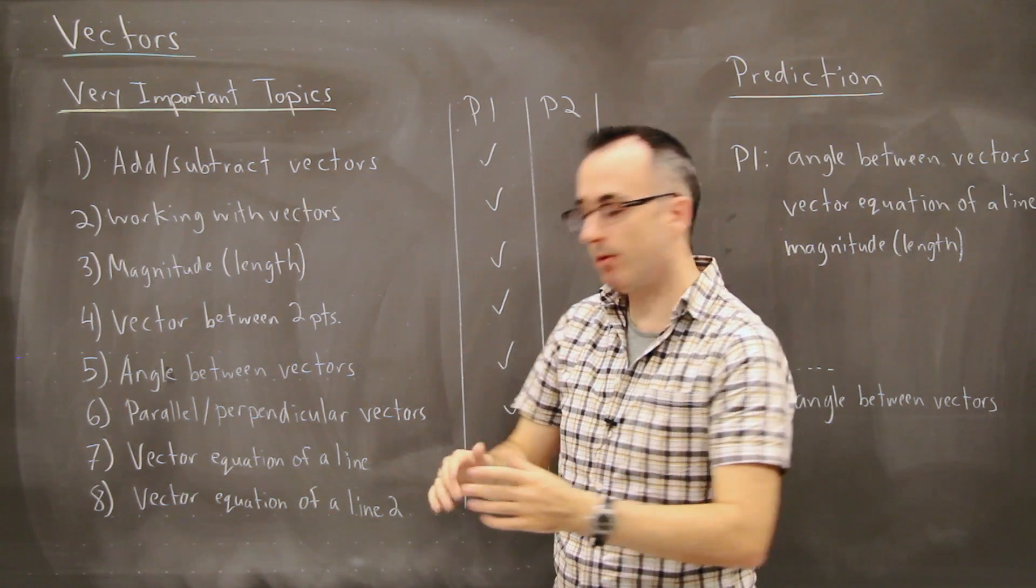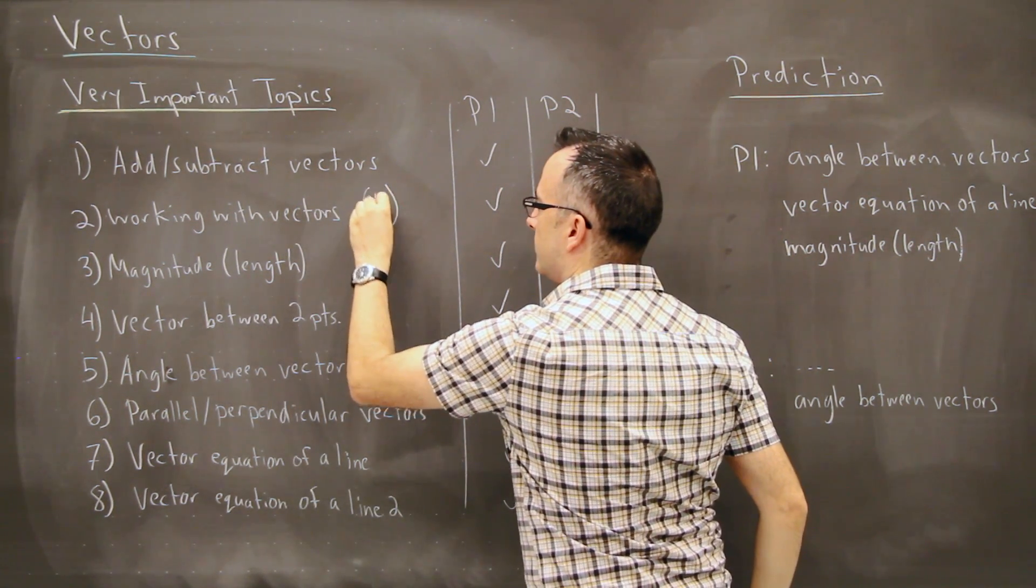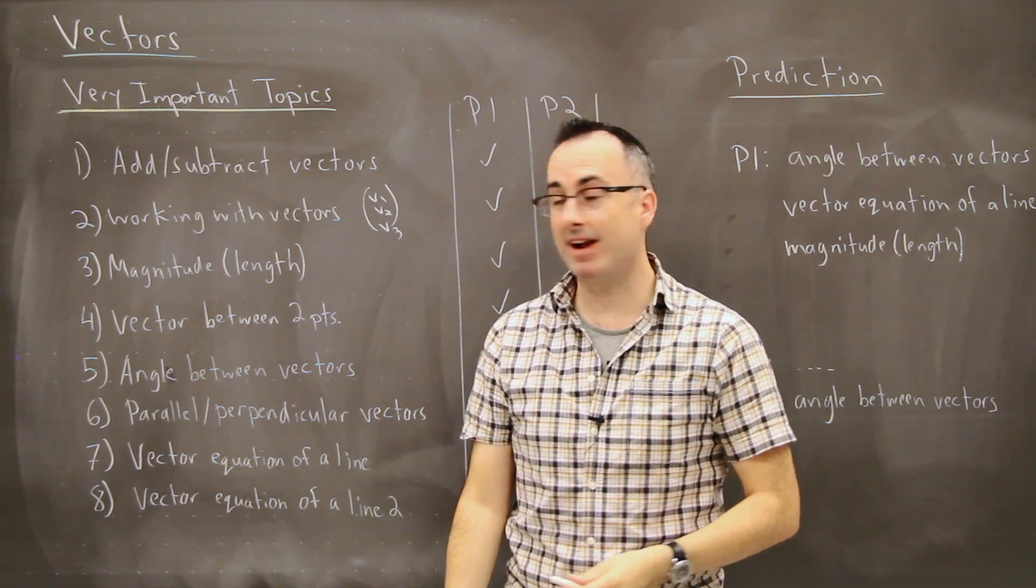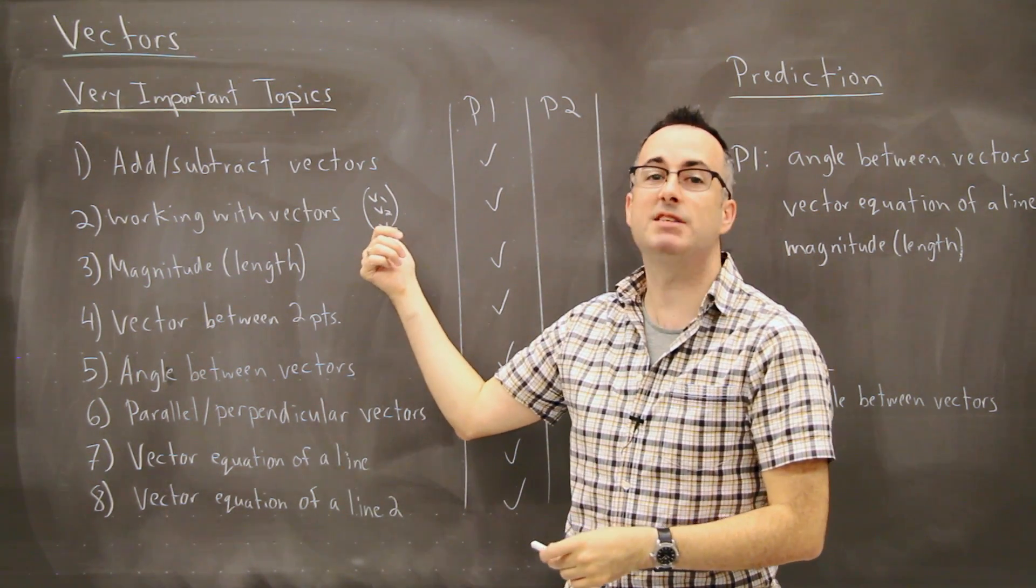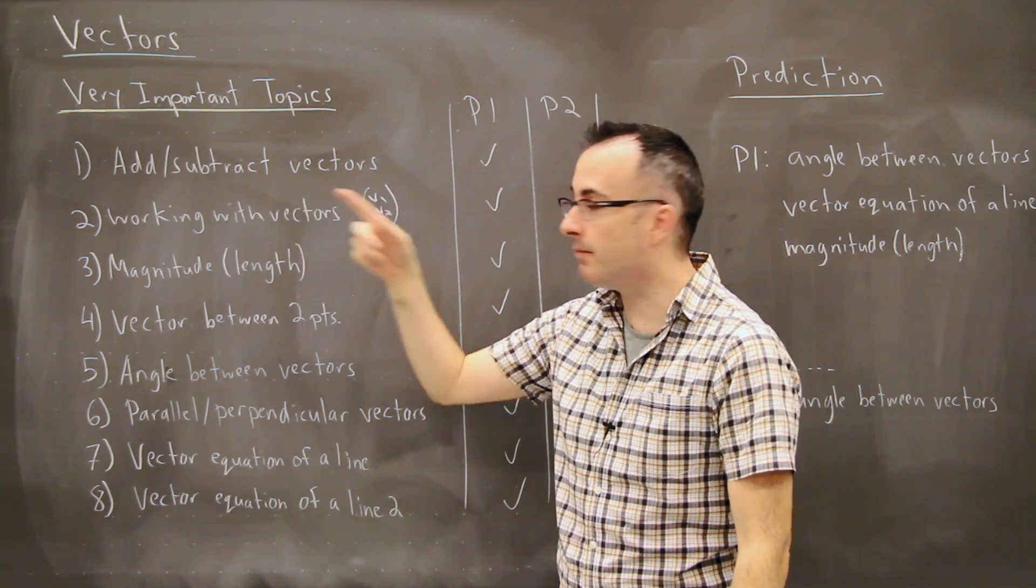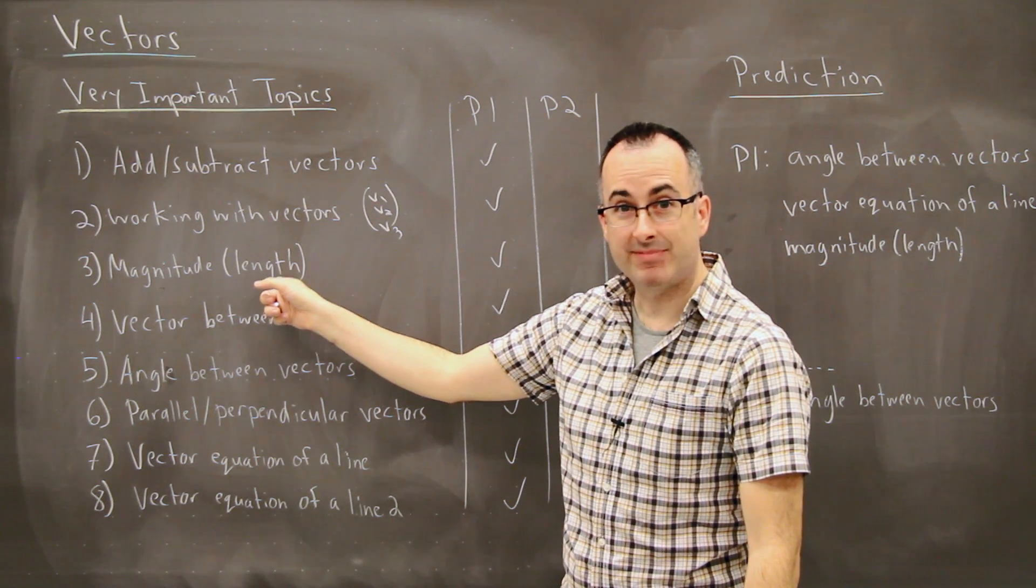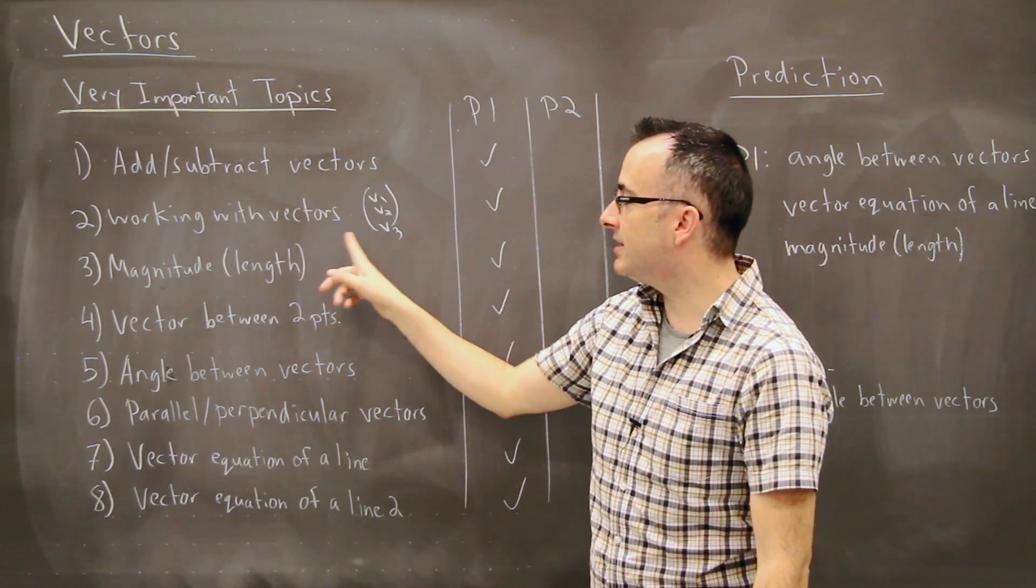This is working with them mathematically. So here you can see the notation, how we write it in sort of a column. We write it sort of like this right here. It might be like v1, v2, v3 because yes we can work with vectors in 3D. Mathematically speaking there's nothing to it, super easy. We can add them, subtract them, multiply by a scalar, no problem.